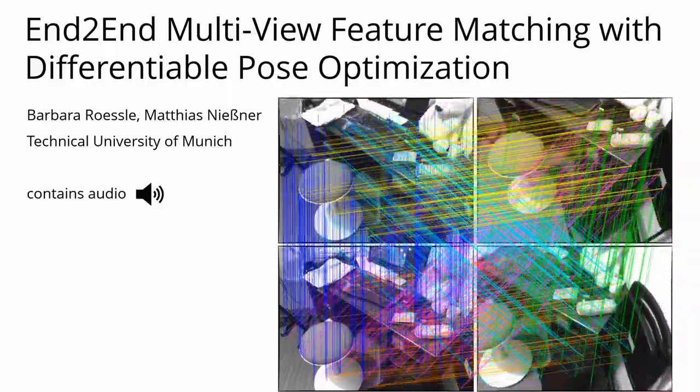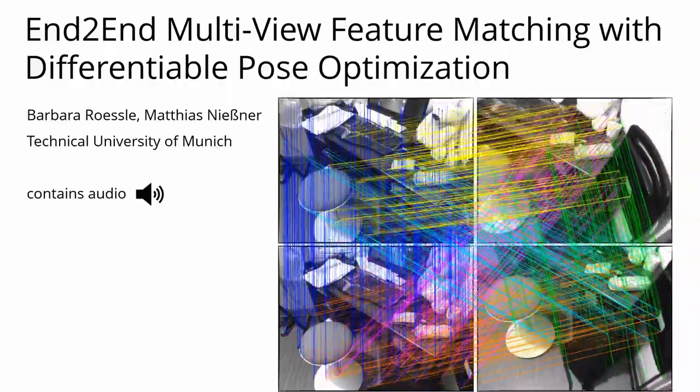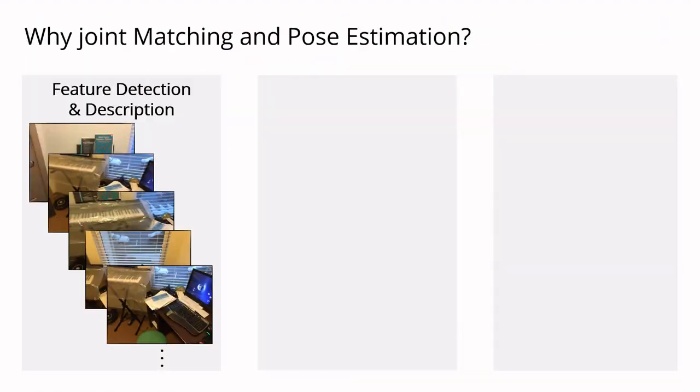We present end-to-end multi-view feature matching using differentiable pose optimization. Conventional pose estimation performs a sequence of isolated steps.